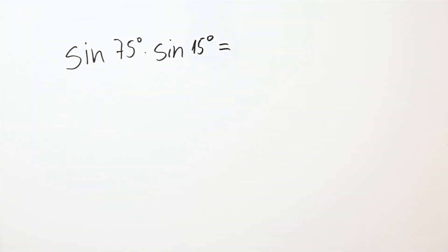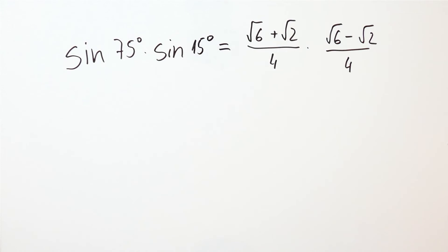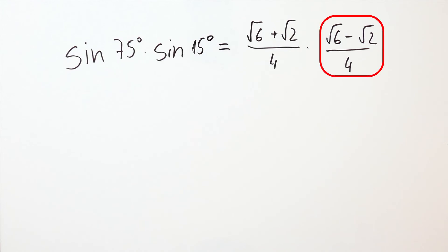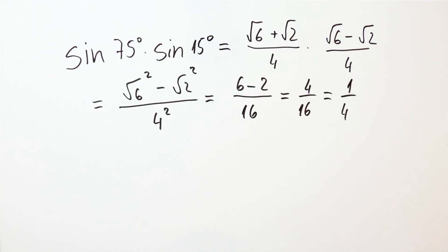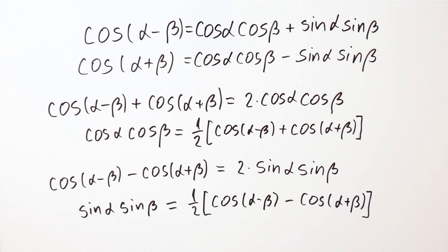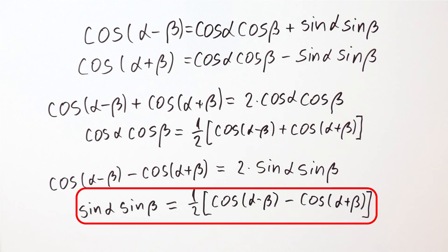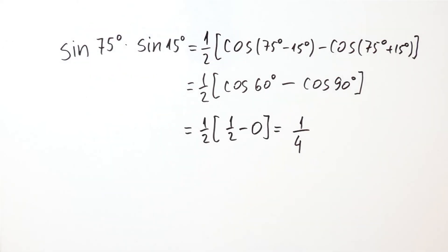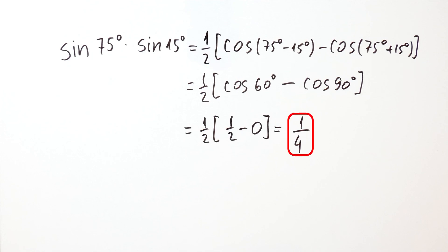We started with the problem of calculating the sine of 75 degrees times the sine of 15 degrees. We recalled that sine of 75 degrees is the square root of 6 plus the square root of 2 over 4, and sine of 15 degrees is the square root of 6 minus the square root of 2 over 4. After multiplying, we got that the product is one over four. However, we didn't have to know those values. Using the formulas for cosine of alpha minus beta and cosine of alpha plus beta, and adding or subtracting them, we derived the formulas for cosine of alpha times cosine of beta, and sine of alpha times sine of beta, giving another way to calculate the product.